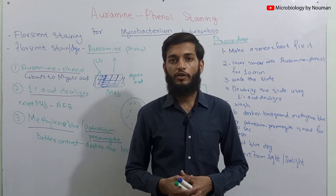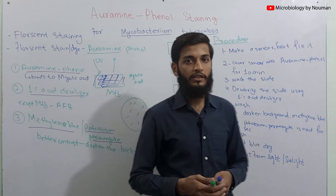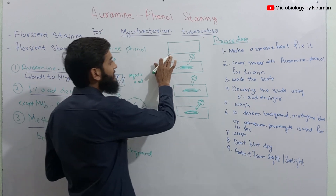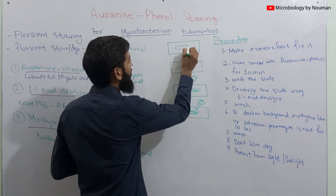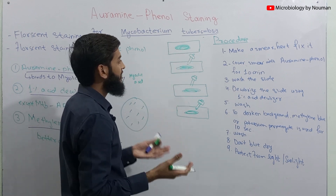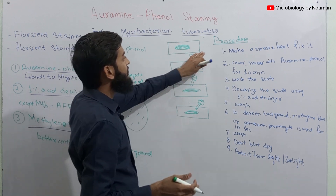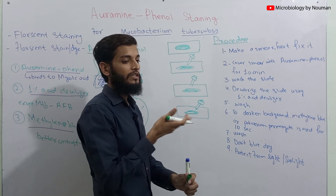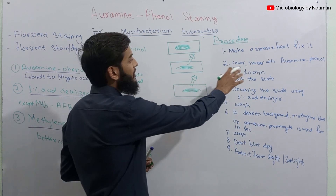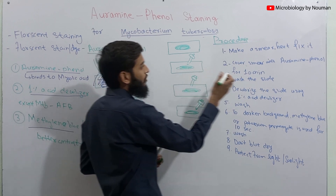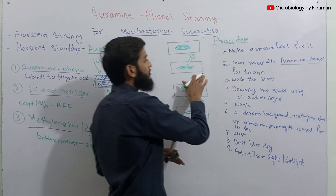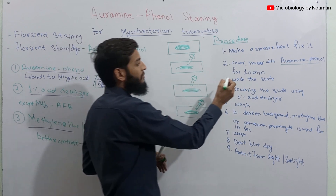Now we'll talk about the procedure of auramine phenol staining. First, we make a smear in the center of a slide, let it air dry, and then heat-fix it by passing it over a flame. In the second step, we cover the smear with auramine phenol for 10 minutes.